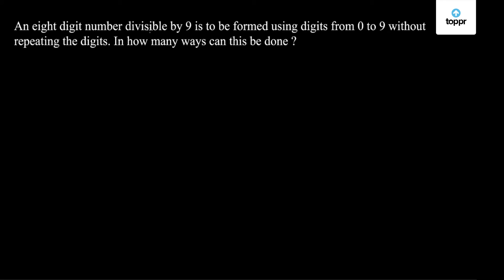The problem is: an 8-digit number divisible by 9 is to be formed using the digits from 0 to 9 without repeating the digits. In how many ways can this be done?